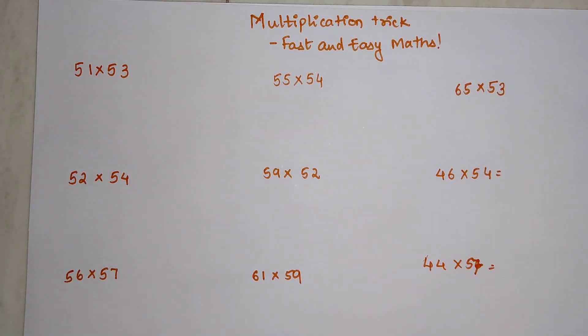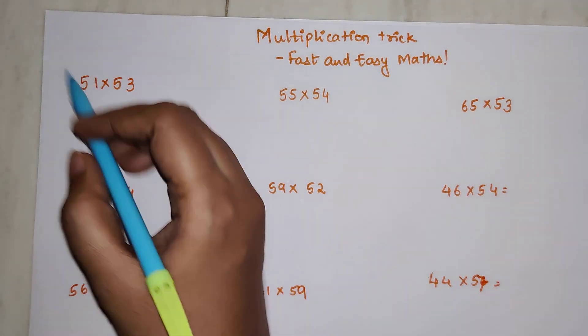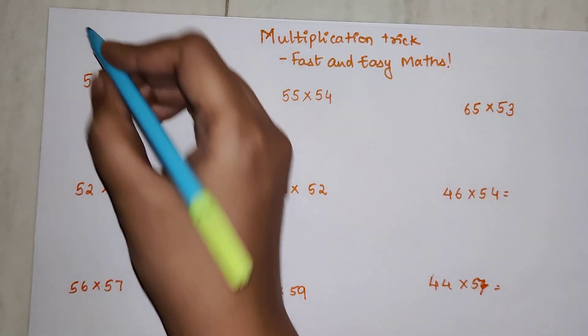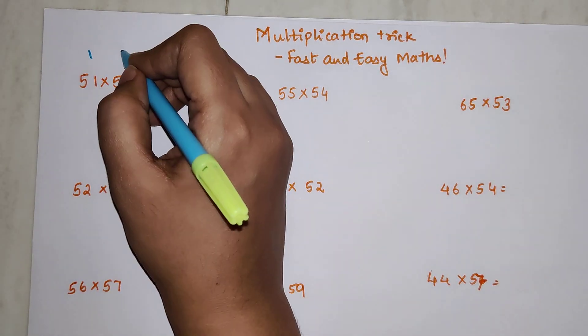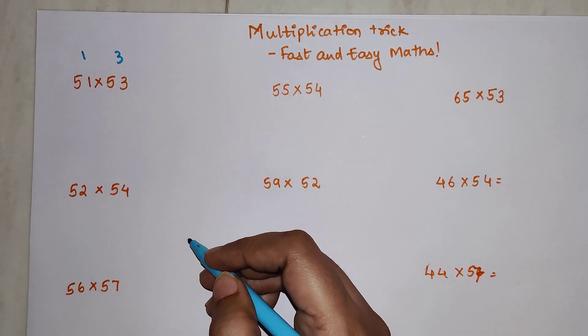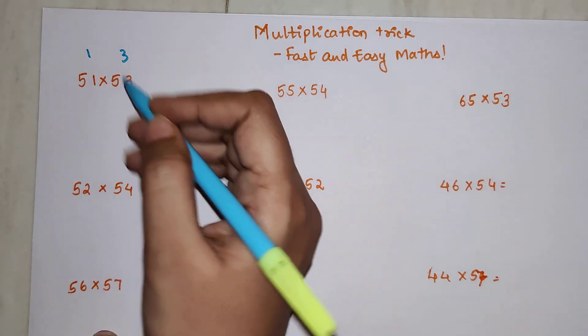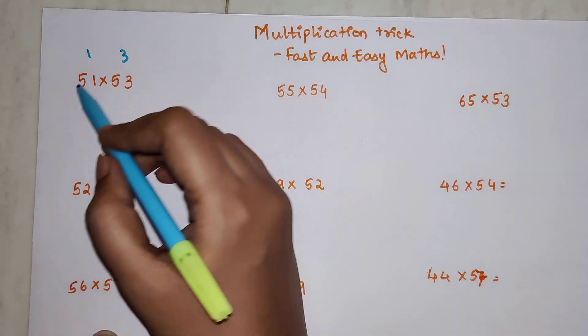These numbers may not look close to 50, but I'm going to use the same trick and you'll see that you can solve these kinds of numbers as well. First, let's get the hang of the trick. We know that 51 is one digit away from 50, and 53 is three digits away from 50.